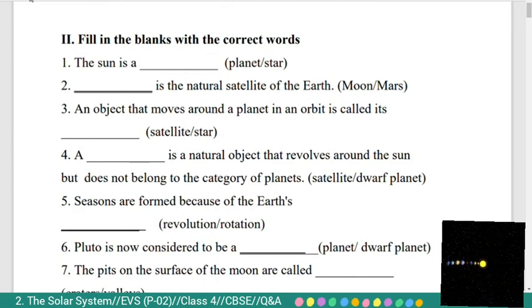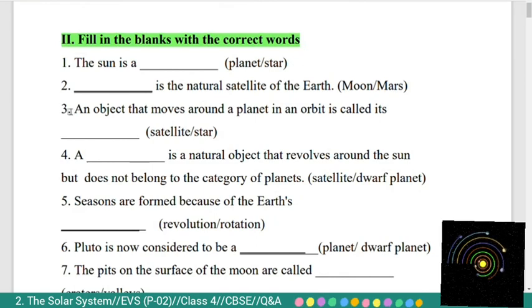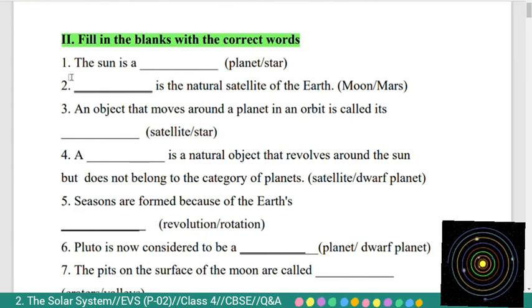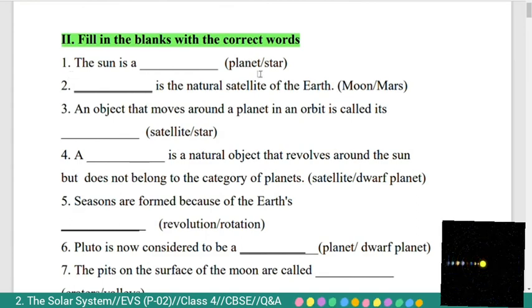Now, second section: fill in the blanks with the correct words. First question: the sun is a — planet or star? The sun is a star.